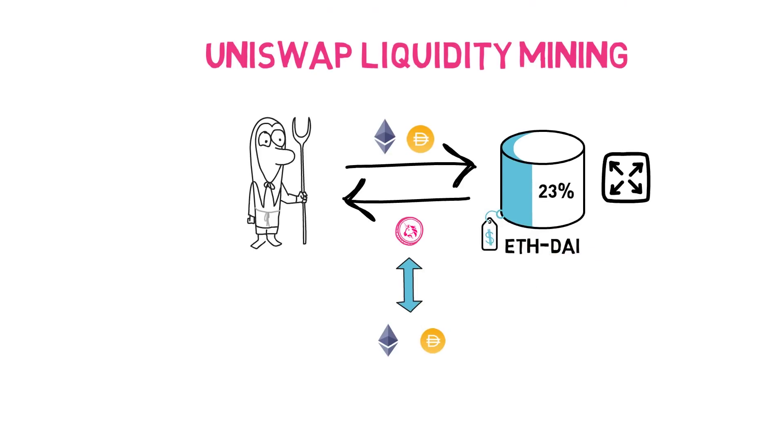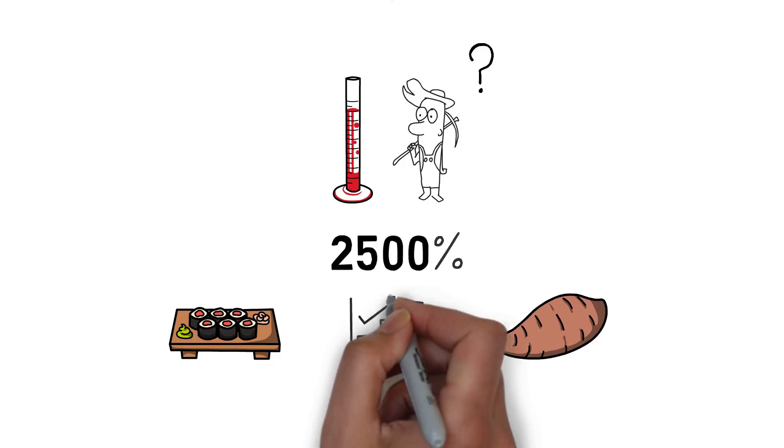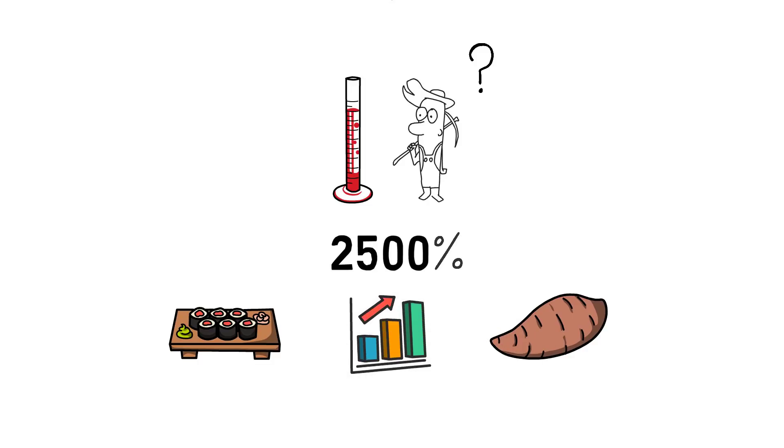Liquidity mining was previously able to bring crazy high APYs, even as high as 2500% in Sushi or Yam farming. So why was that even possible before? The answer is fairly simple. There was a high demand for the tokens that were being distributed.